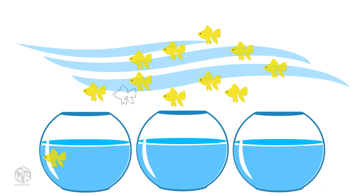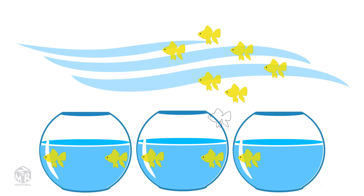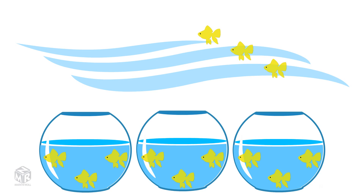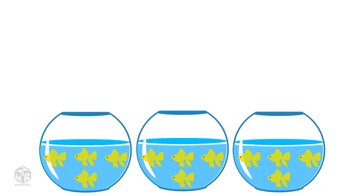Let's add the fish one at a time into each fish bowl. Now we have one fish in each tank, two fish in each tank, three fish in each tank, four fish in each tank.